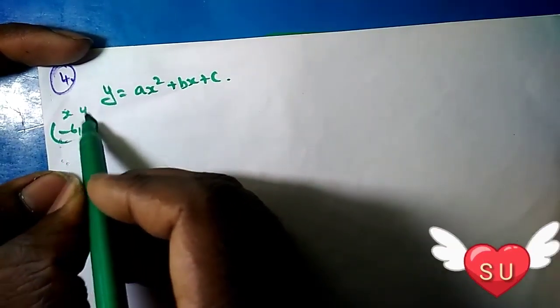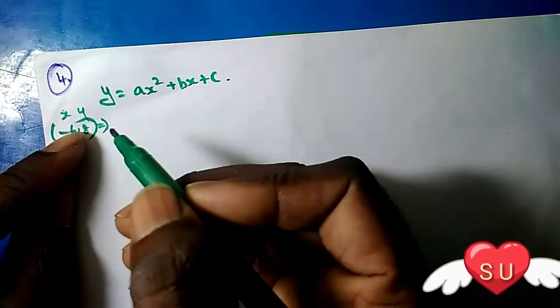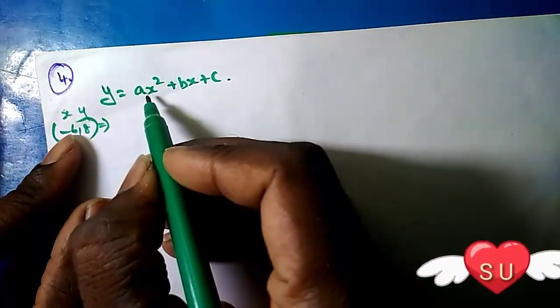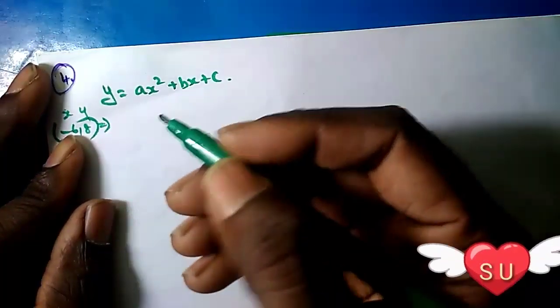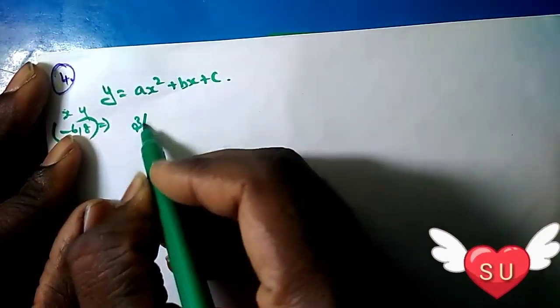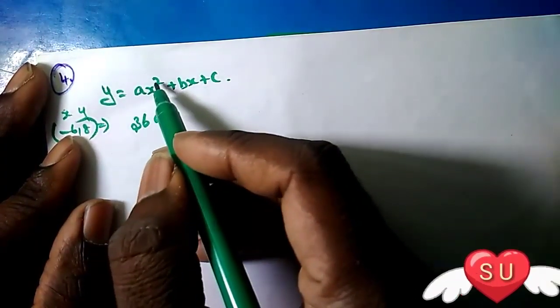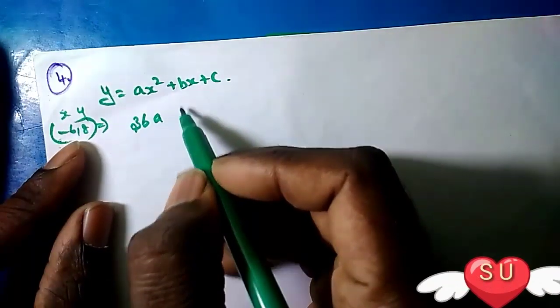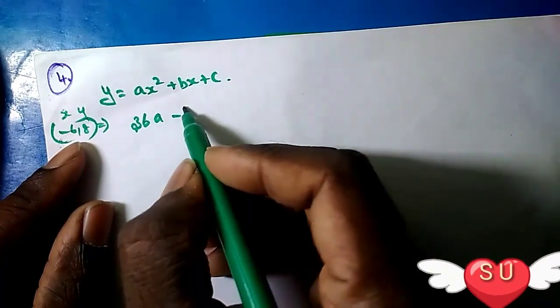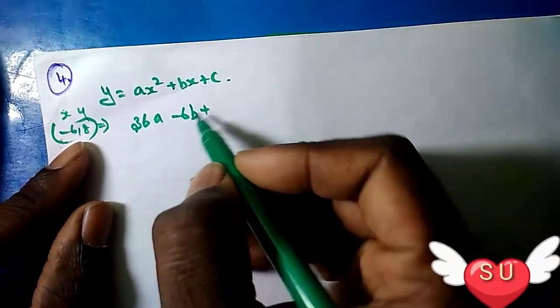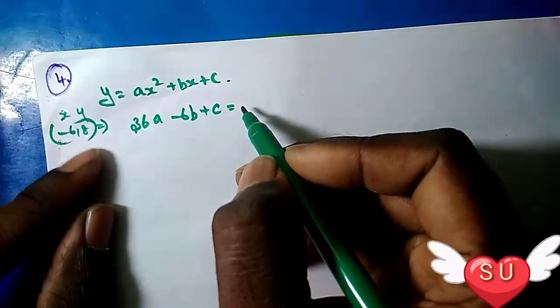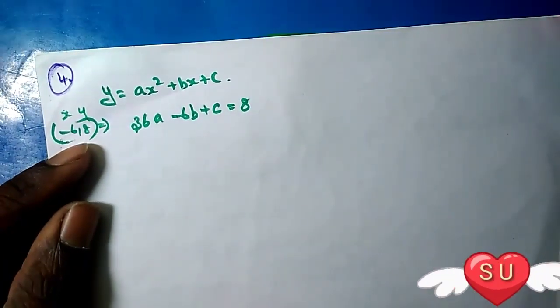The first point is (-6, 8). So x is -6 and y is 8. Substituting into the equation: (-6)² = 36a, then -6B, plus C equals 8. This is the first equation: 36a - 6b + c = 8.